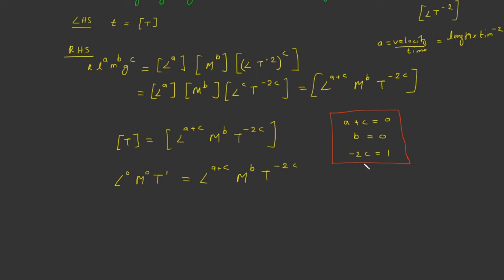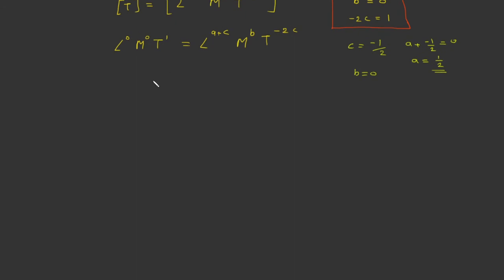Using these three equations we get the values of a, b, and c. From minus 2c equals 1, we get c equals minus 1 by 2. Substituting into the first equation: a plus (minus 1 by 2) equals 0, so a equals 1 by 2. We already have b equals 0. So we have found all three values: a equals 1/2, b equals 0, c equals minus 1/2.